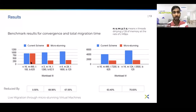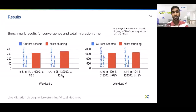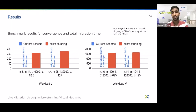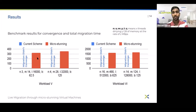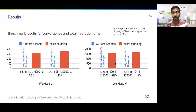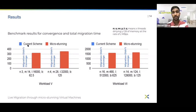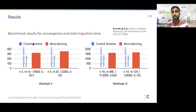For workload types 5 and 6, the difference gets more pronounced because migrations did not converge with the current scheme. With micro-stunning, the migrations not only converged but converged within reasonable amounts of time: for type 5, migrations converged within around 6 minutes, and for type 6, migrations converged in around half an hour. Note that without it, the current scheme would try to converge by throttling the VM to 99%, meaning the VM would be running 99% slower for very long — which is very bad for guest performance.